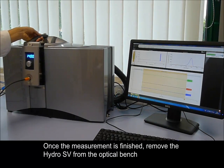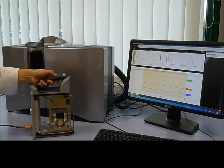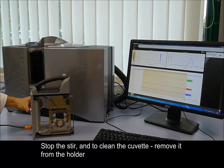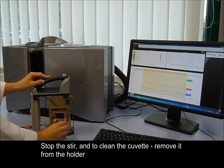Once the measurement is finished, we can remove the Hydro SV from the optical bench, stop the stirrer, and then in order to clean the cuvette, we remove it from the holder.